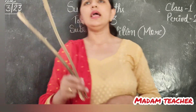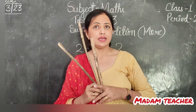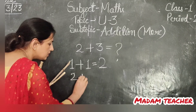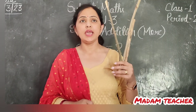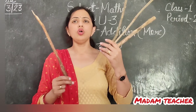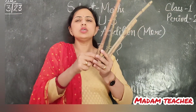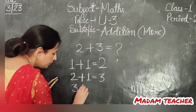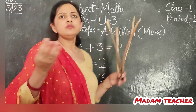Then again, 2 sticks — usne ek aur add ki. So 2 plus 1 will be 3. How many sticks I have in my hand? It's 3. Again, that boy picked one more stick — he added one more stick to the last 3. So 3 plus 1 now becomes 4.